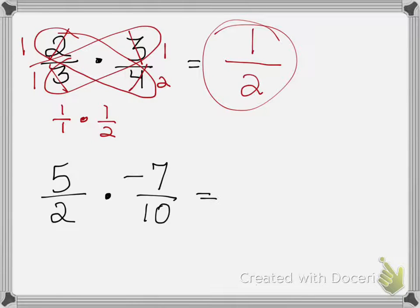Let's look at another example. Looking diagonal, we have 5 and 10. What number divides into 5 and 10? 5! 5 divided by 5 is 1. 10 divided by 5 is 2.